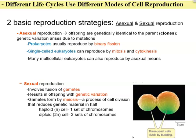Some single-celled eukaryotes can also reproduce asexually, but their process is called mitosis followed by cytokinesis. And some multicellular eukaryotes like plants or fungi can also reproduce by asexual means.